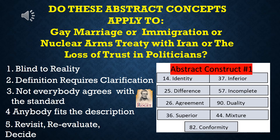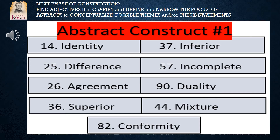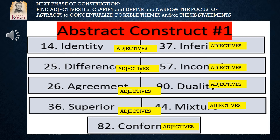Then, on the right-hand side of the screen, you'll see abstract construct number one, completely out of Roger's Thesaurus. The next phase of construction is to find the adjectives from a list that will be provided to you that helps you to narrow the focus of the very general abstracts listed here. We want to narrow the focus of these abstract concepts by adding adjectives to each other.